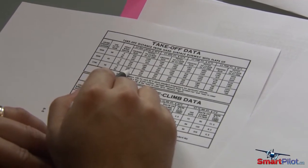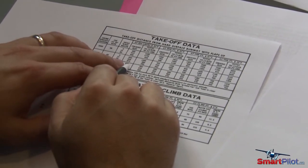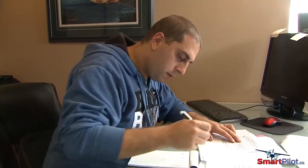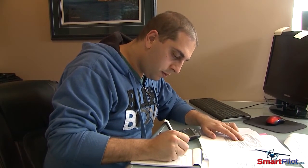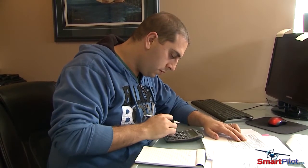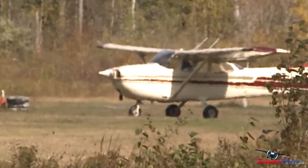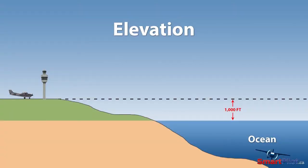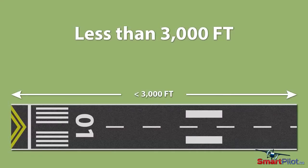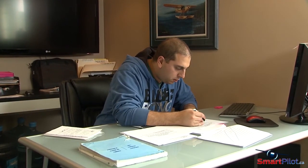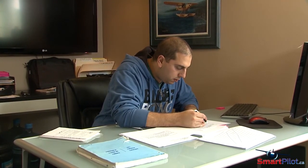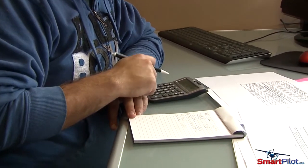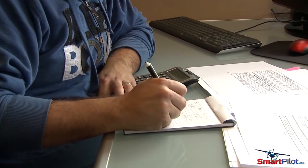understand the takeoff and landing performance charts for your airplane. As a general rule for light aircraft, if operating on any higher than standard temperature day and at an airport of 1,000 feet or more above sea level with a runway less than 3,000 feet long, calculate your density altitude and pay close attention to performance penalties as shown in your aircraft owner's manual.